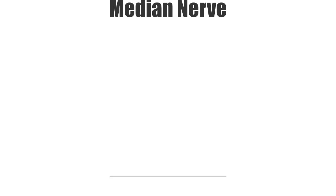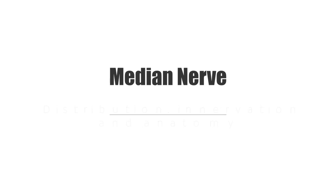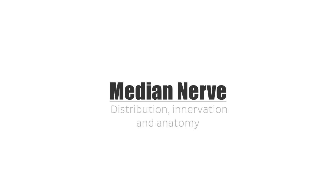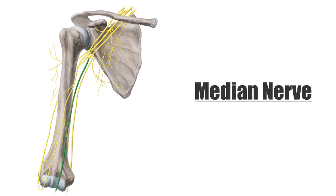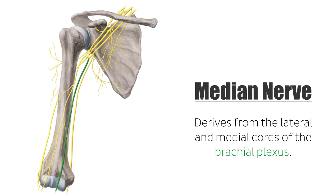Hello, this is Matt from KenHub. In this tutorial we will discuss the distribution, innervation, and anatomy of the median nerve. The median nerve derives from the lateral and medial cords of the brachial plexus, and initially travels down on the medial side of the arm along with the brachial artery.